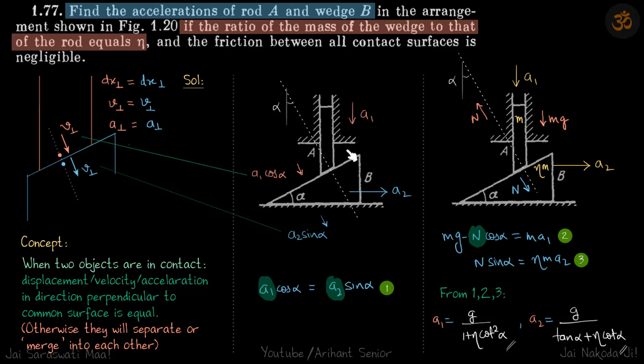So if a1 is downwards and we can see this is alpha, then in this direction the acceleration of the rod is a1 cos alpha, which is equal to a2. This angle is also alpha. So in this direction acceleration of wedge is a2 sin alpha. So a1 cos alpha equals a2 sin alpha. So this is our third equation. Now we have three variables and three equations. So solving that we can get a1 and a2.